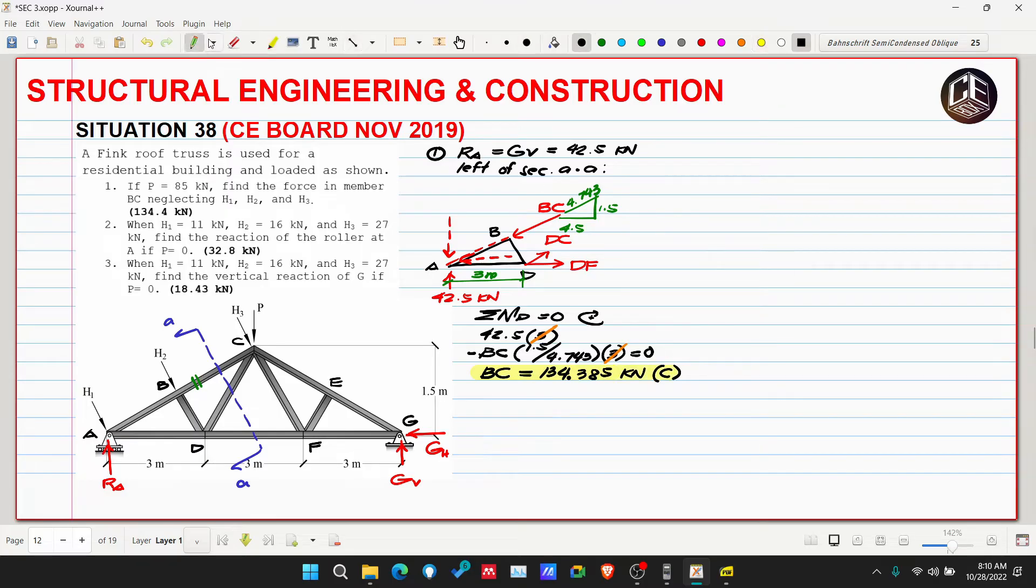So 134.385 kilonewtons. The positive magnitude confirms our assumption that it's a compressive force. Next, problem two: when H1 is 11 kilonewtons, H2 is 16 kilonewtons, H3 is 27 kilonewtons, find the reaction at roller A if P is equivalent to zero.